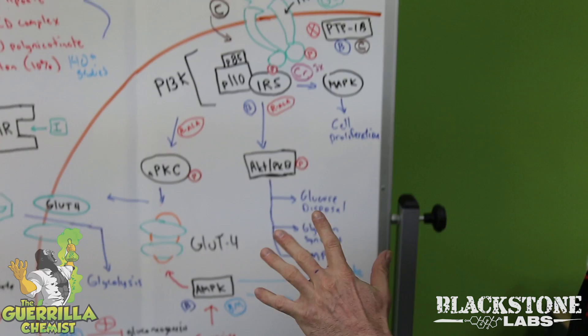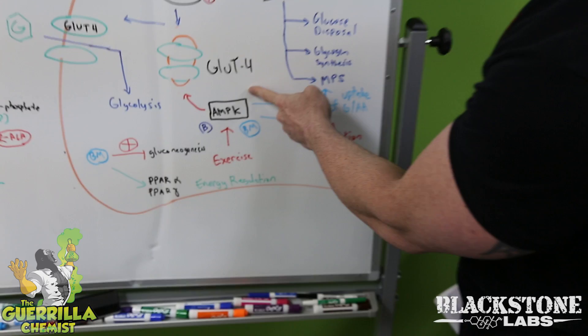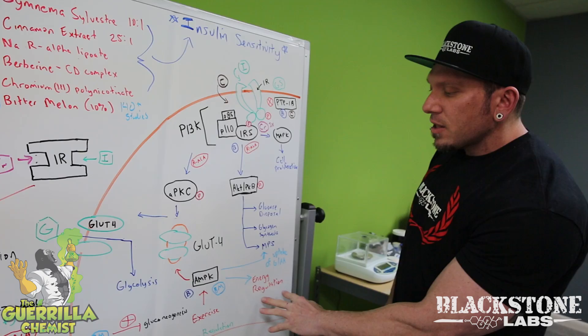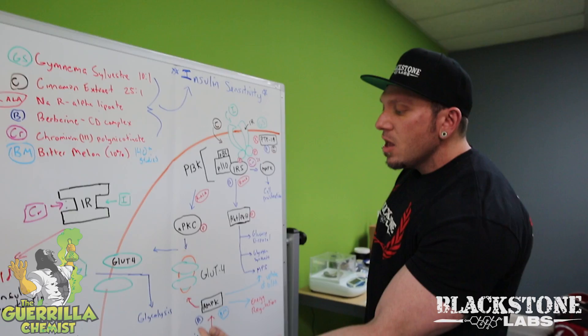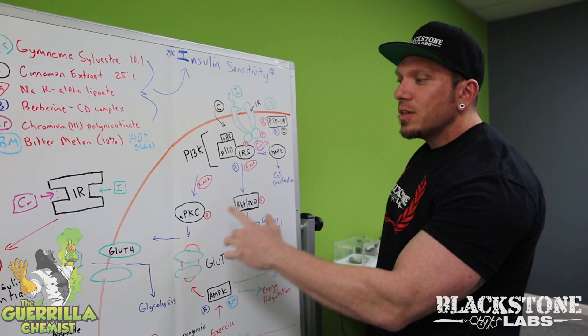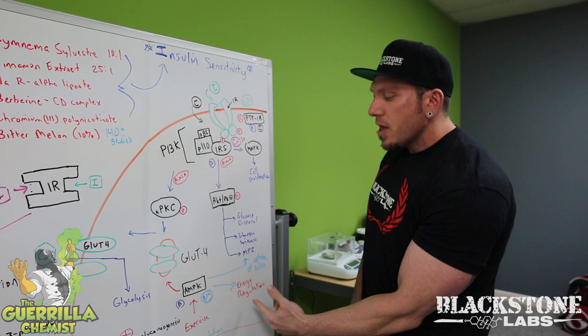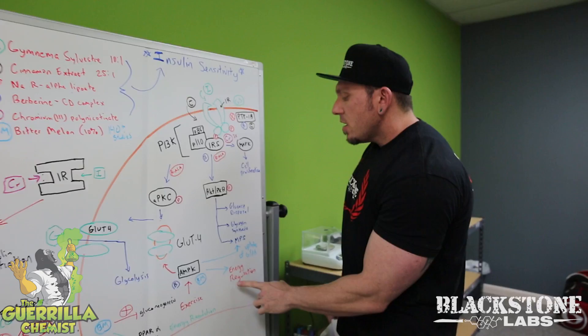Berberine also does something different: it activates a kinase called AMPK. AMPK does many things, one of which is energy regulation as well as GLUT4 expression — so now we're bringing more glucose into the cell via a different pathway than R-ALA and cinnamon. We now have two different pathways bringing more glucose into the cell, plus energy regulation. Berberine is a very important compound and one of the best partitioning agents you can get, helping your body control both lipid metabolism and glucose metabolism.